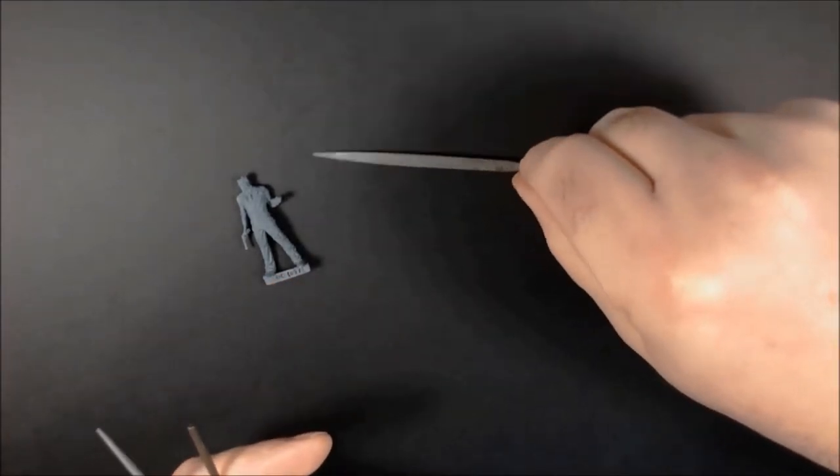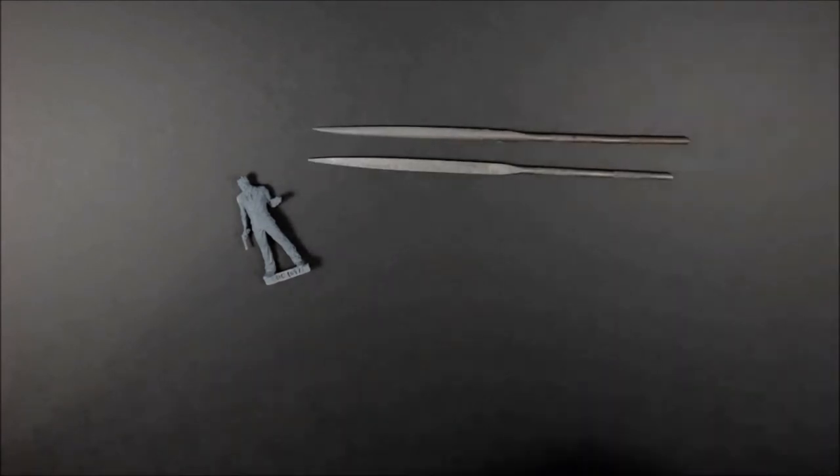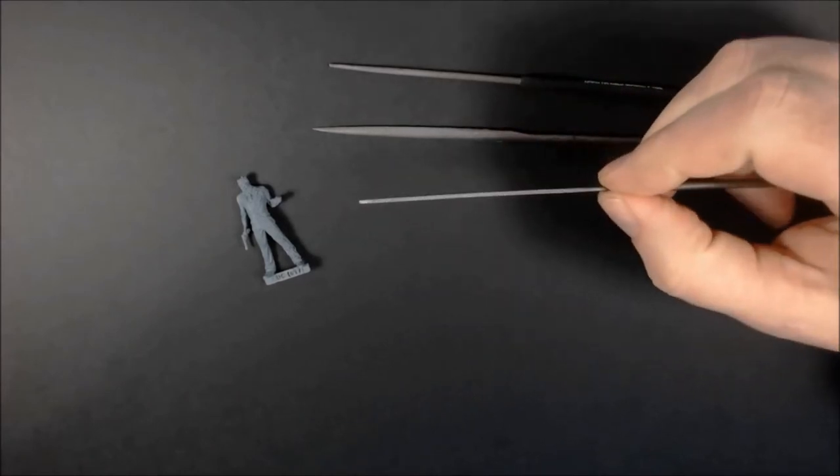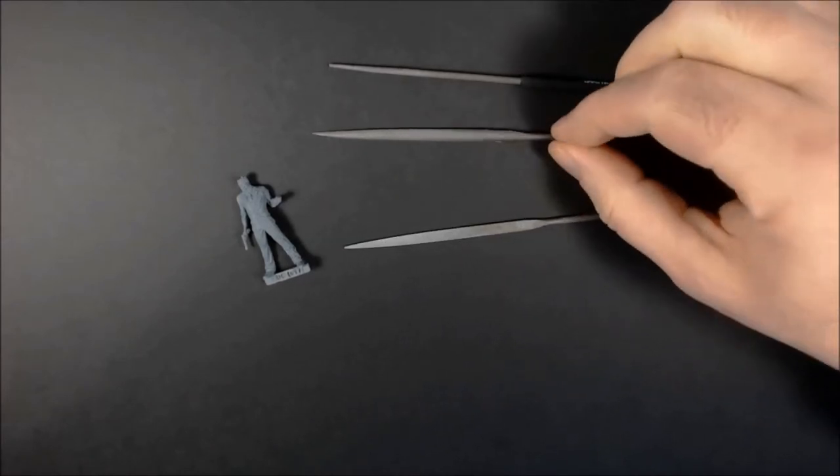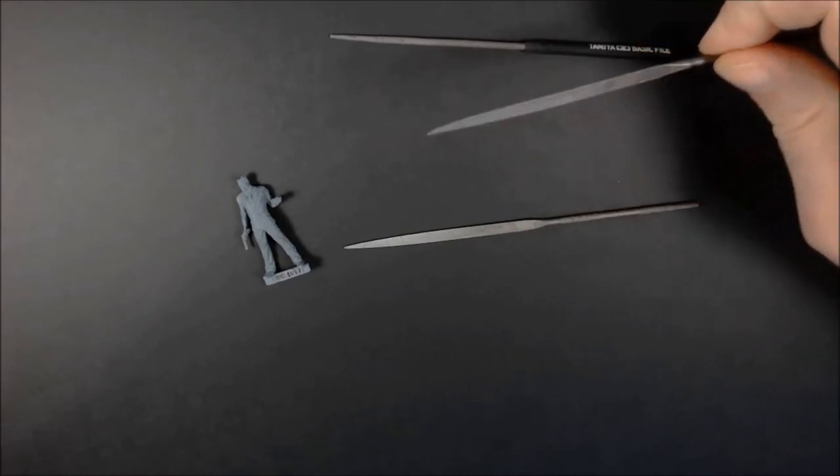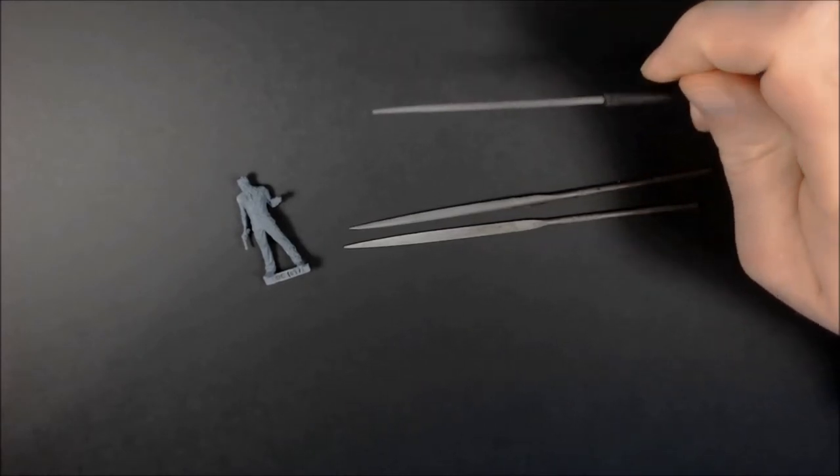Moving on to needle files, if you can pick up a pack, this is a flat edge one. This one's got a slight curve on one side and then flat on the other. That's good for getting into difficult areas.